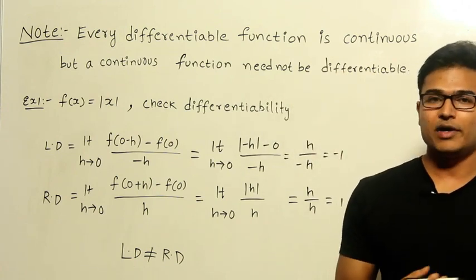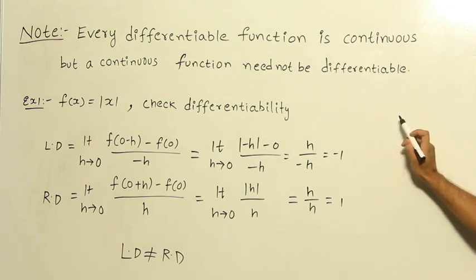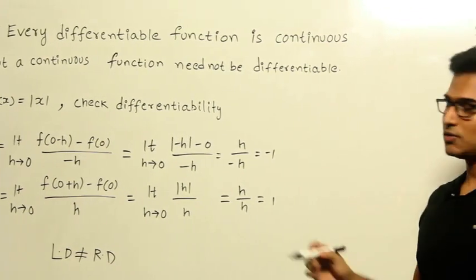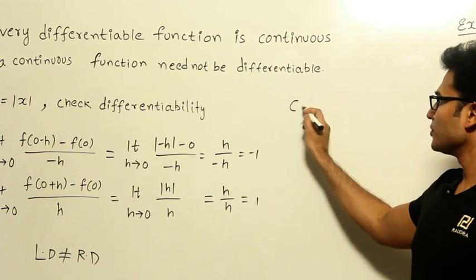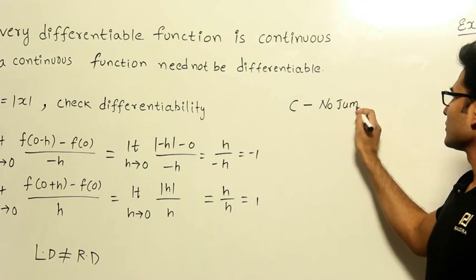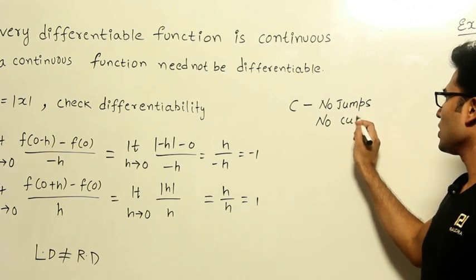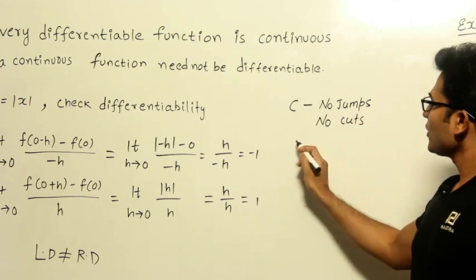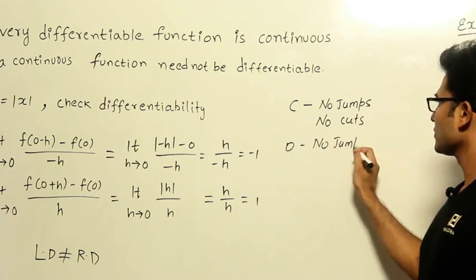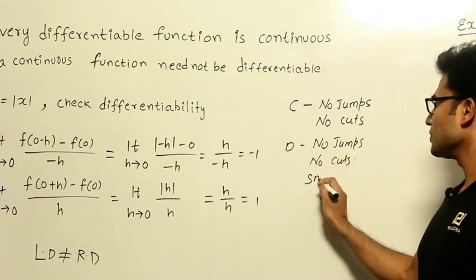So what does it mean? Going into the informal definition — what did we see about continuity? There should be no jumps, as well as there should be no cuts, which means no holes. Now what about differentiability? Differentiability says that there should be no jumps and no cuts. No cuts means no holes, as well as the curve should be smooth.